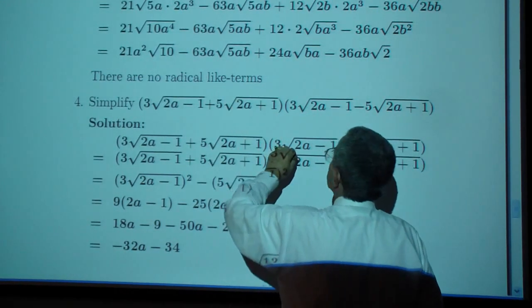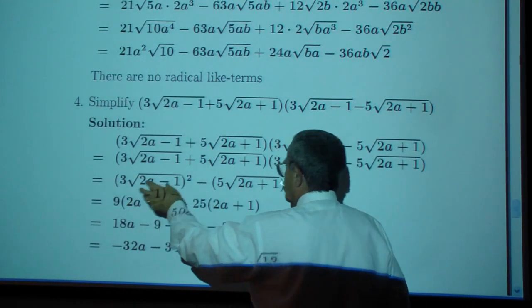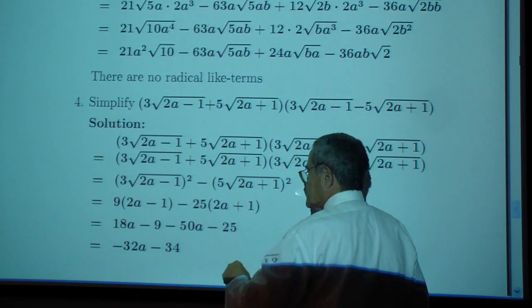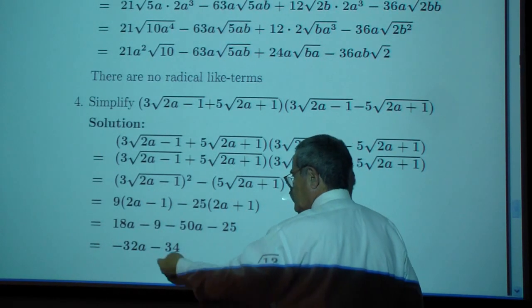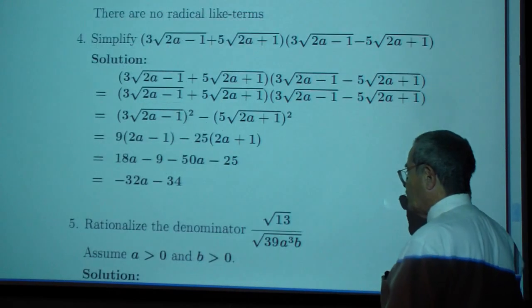And then in this one I have quantity one plus quantity two times quantity one minus quantity two which is quantity one squared minus quantity two squared. This gives you this line. You combine like terms you're supposed to get negative thirty two a minus thirty four.